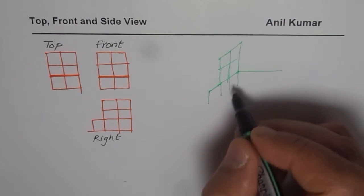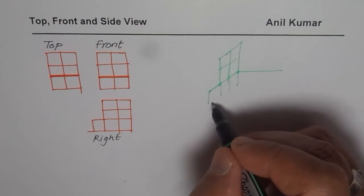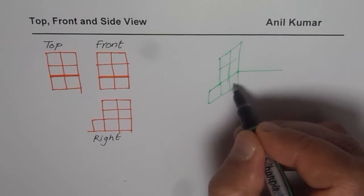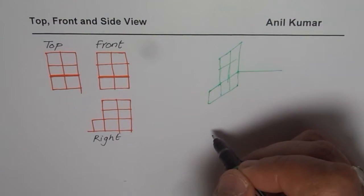So that is how you get one, two, and this is your third square. And that gives you the side view. Do you get the idea?